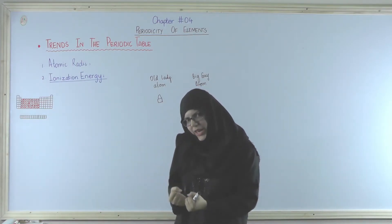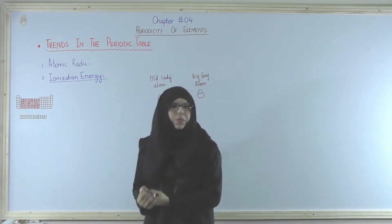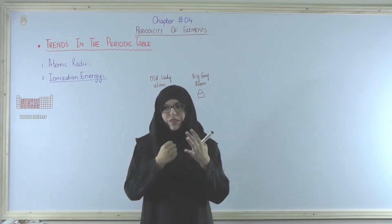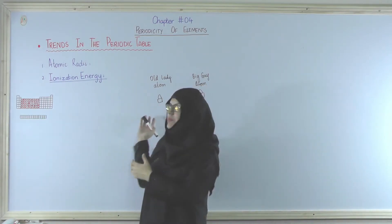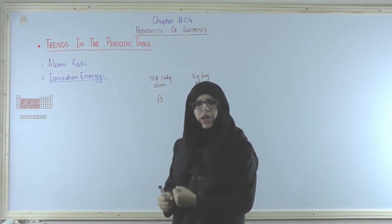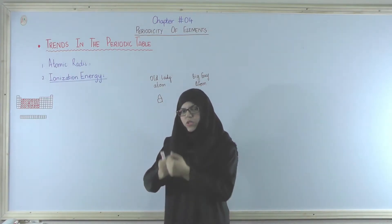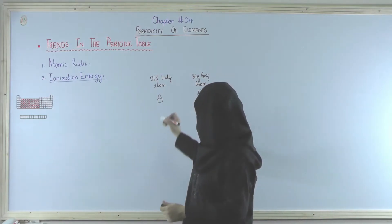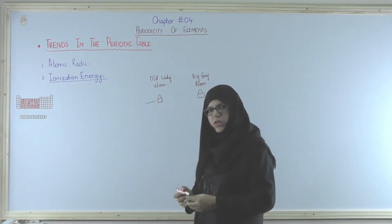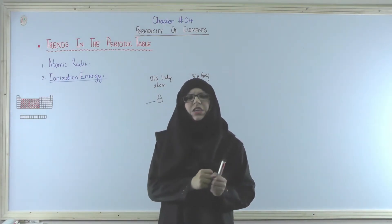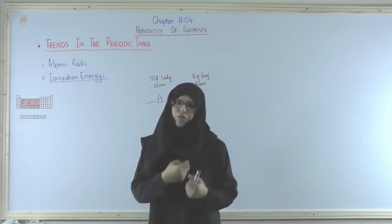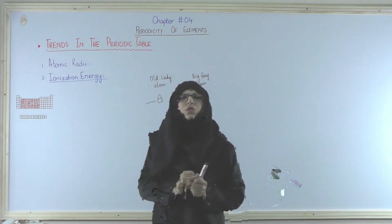Aisa kyun hoga? Because she is weak. She is not carrying her purse with that much of strength. Unhone itni mazbooti se nahi pakra hua. Unke paas itni taakat bhi nahi hai. Aur purse itna zyada strongly unse close bhi nahi hai, unse attached bhi nahi hai. To isko steal karne mein kisi bhi thief ko zyada energy waste karne ki need nahi hogi. He just needs to snatch it out from her and run away.